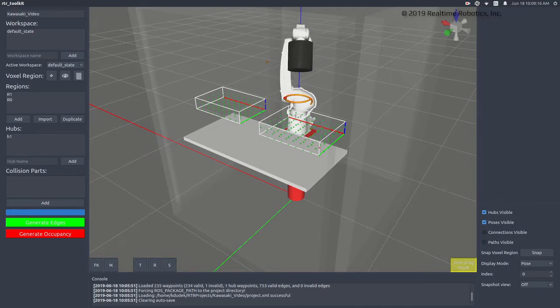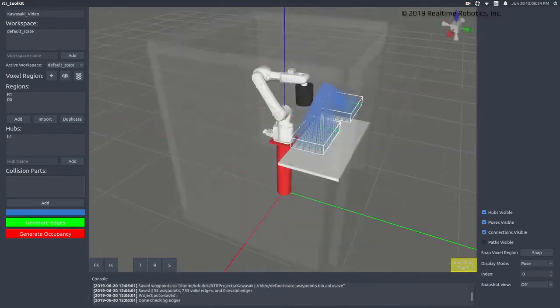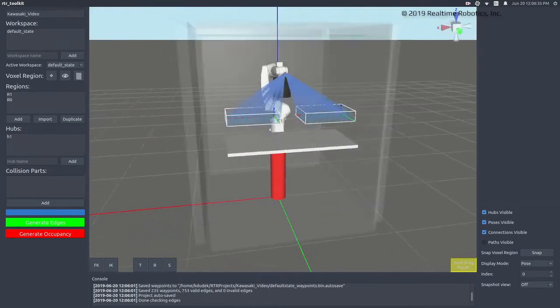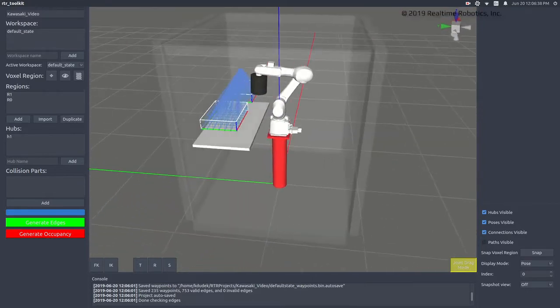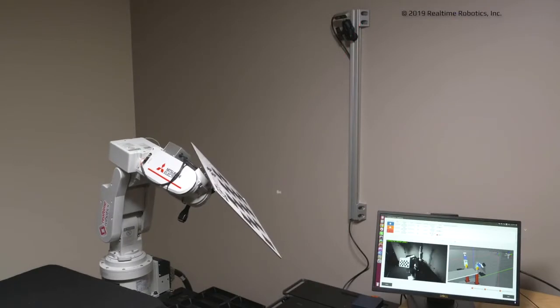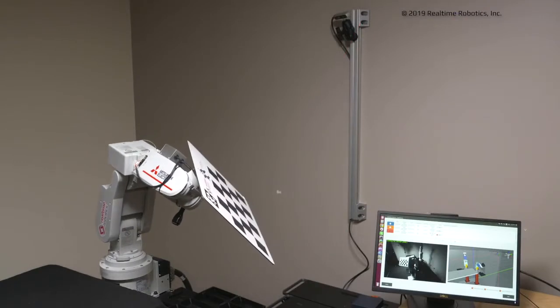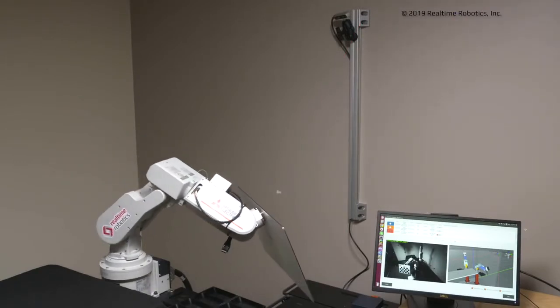The toolkit takes these inputs and generates a roadmap of potential paths for the robot, which it can use to find collision-free motion at high speed. In addition to the roadmap, RapidPlan uses a standard 3D point cloud as input.